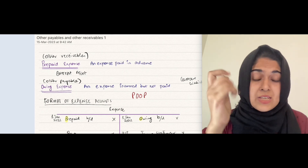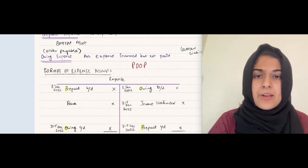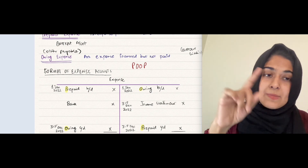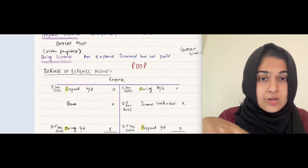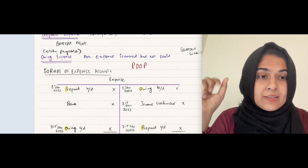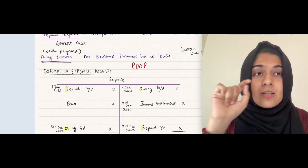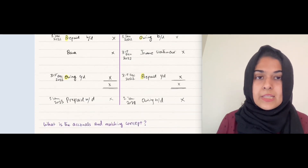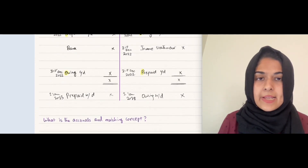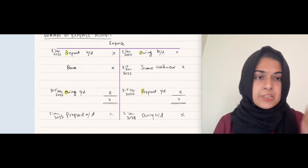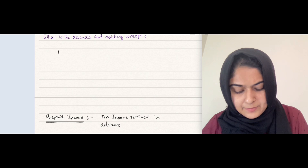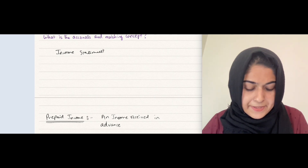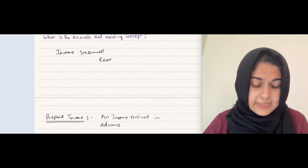There are other payables and other receivables. For the expense T-account, you should remember the PDOOP rule. Bank is written on the debit side of the expense account because the bank itself is being credited. When an expense is paid, it is recorded on the credit side of the cash book, and that is why the expense account is debited. The basic rule in double entry accounting is: debit all expenses, credit all incomes.